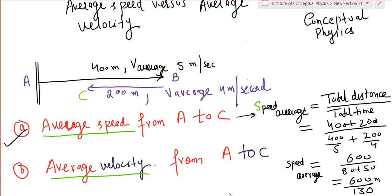It moves from B to A, that is towards west, a distance of 200 meters at an average of 4 meters per second. Question number one is what is the average speed of this body in the total time interval?